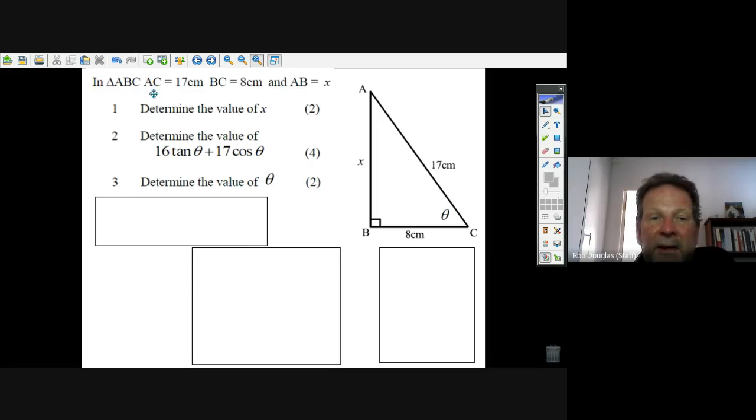There's triangle ABC where AC is 17 centimeters - that's the hypotenuse. BC is eight centimeters, and AB is an unknown, X.